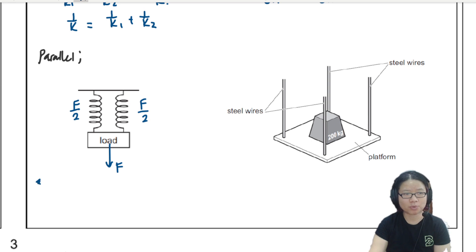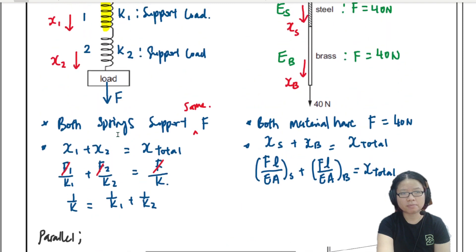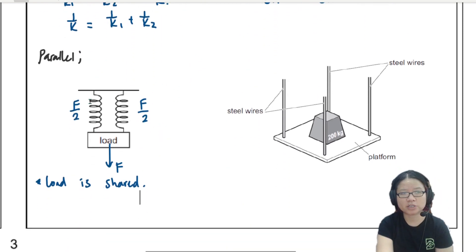So instinctively, you will know that when things are arranged side by side, they support the weight together. So let's say this load is still a force of F. Each spring will have F over two, F over two. They share the load. So the main idea number one, load is shared.